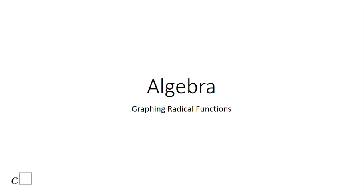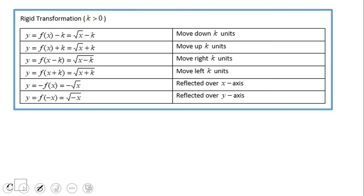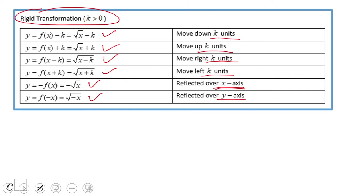Welcome back. In this video clip we're going to talk about graphing radical functions using transformations. First, let's take a look at the transformations. There are some we can call rigid transformations: move down k units, move up k units, move right k units, move left k units, reflect over the x-axis, reflect over the y-axis. All these are called rigid transformations.